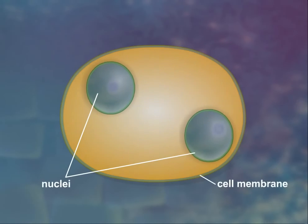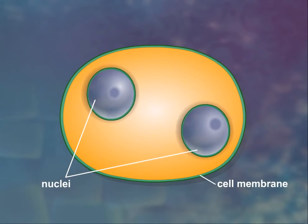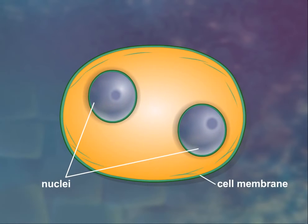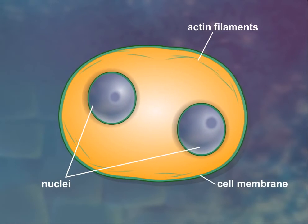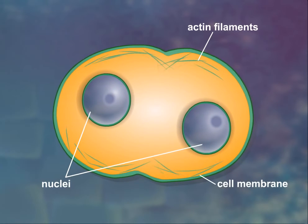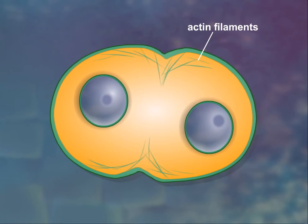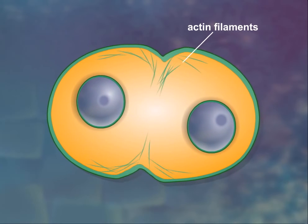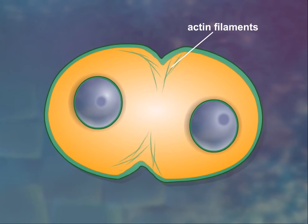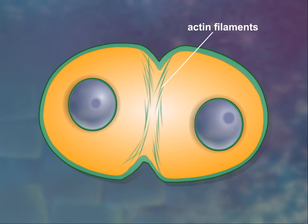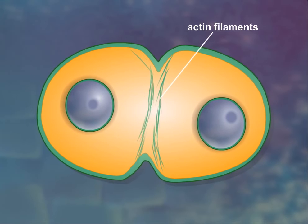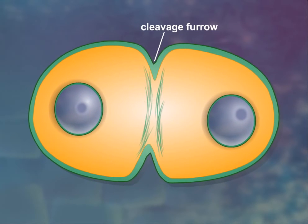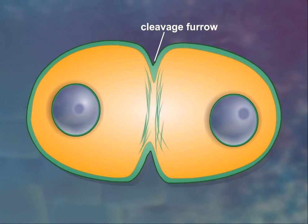In animal cells, cytokinesis is achieved by a constricting belt of actin filaments interacting with myosin. As the filaments slide past one another, the diameter of the belt decreases, pinching the cell and creating a cleavage furrow around the cell's circumference.